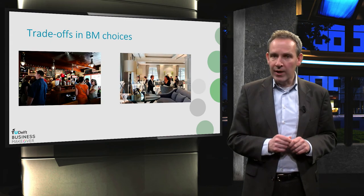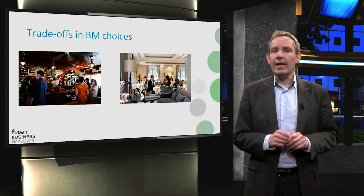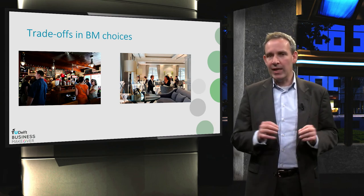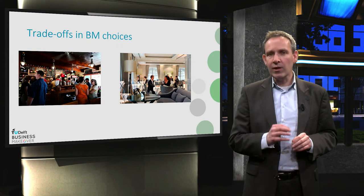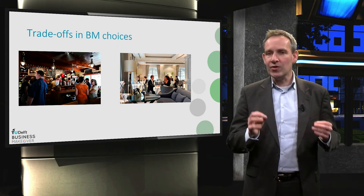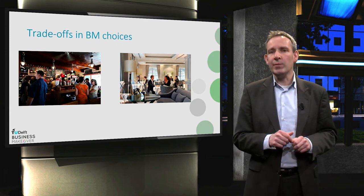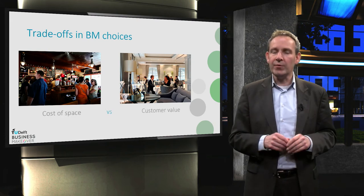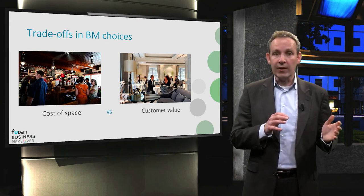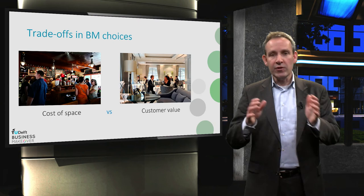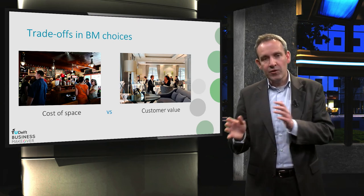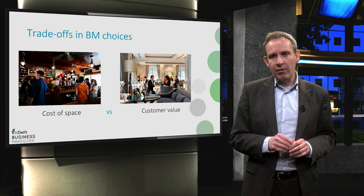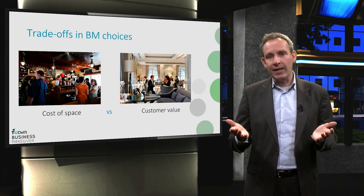Take again Gordon, our restaurant owner. He currently has some standing tables in his restaurant to save space, but he learned that most customers prefer to sit instead of stand up during their meal. He therefore has to make the trade-off between efficient use of space and cost versus customer value. So designing a business model is an iterative process as well as a balancing act.